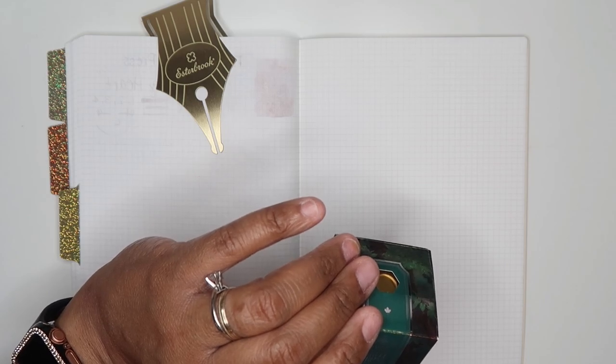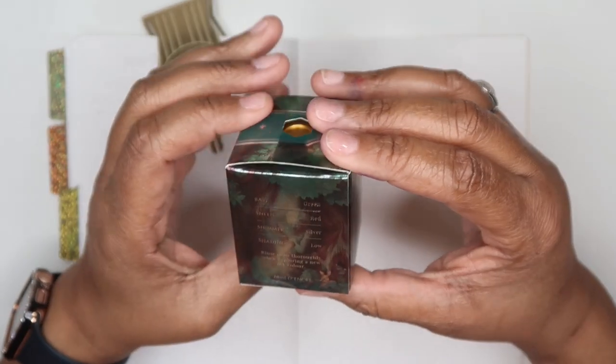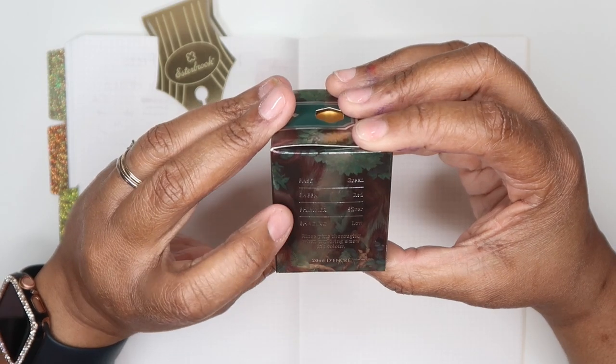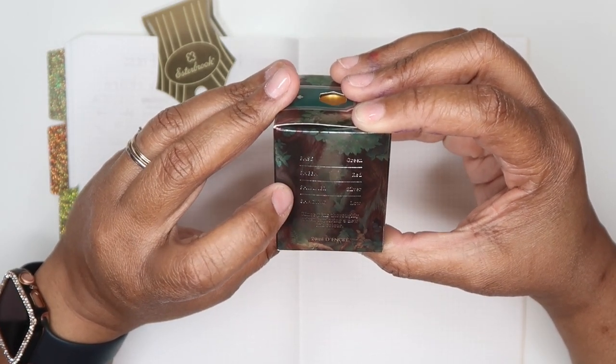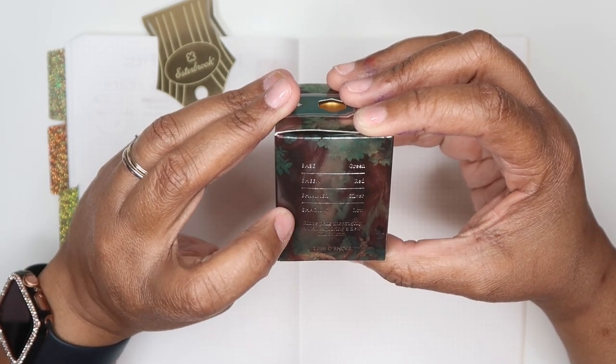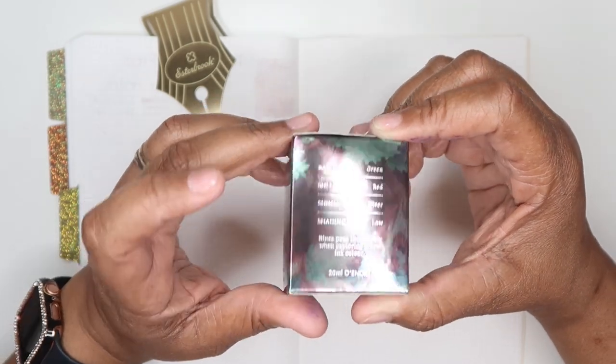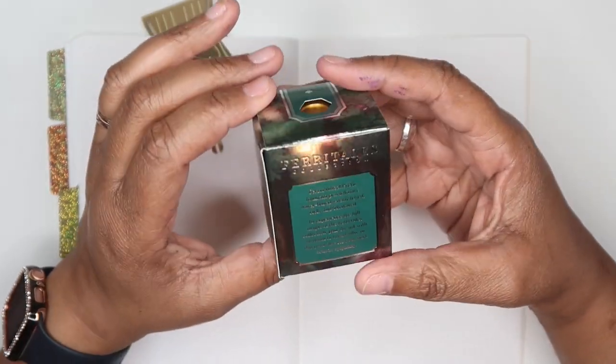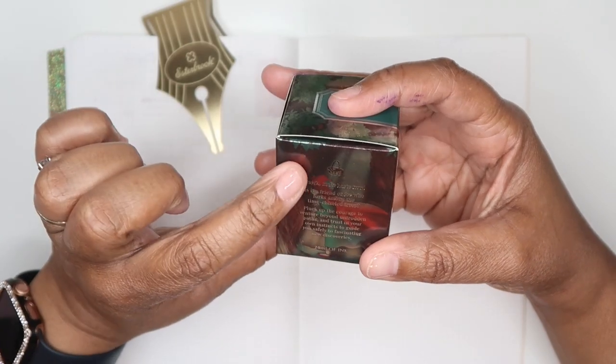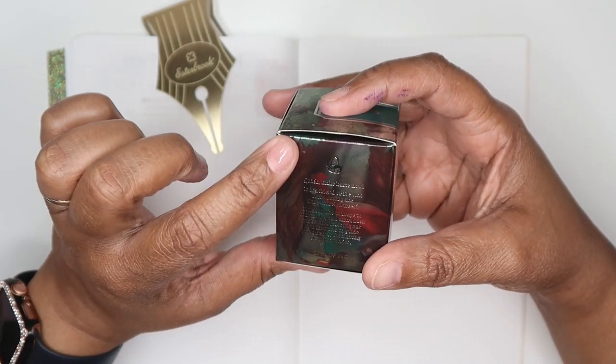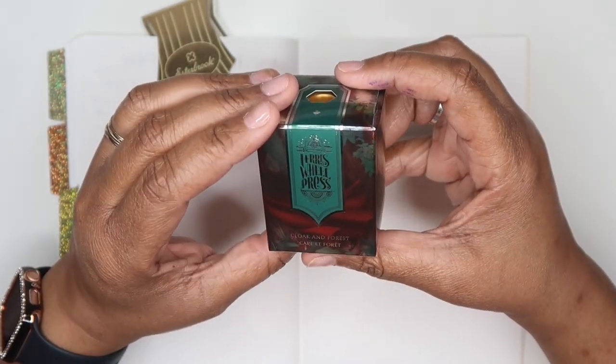So let's see here. This says, this is a base of green with a sheen of red, the shimmer of silver, and then the shading is low. So look at this box. This is so beautiful. You can see the sheening of the red, the deep green forest.